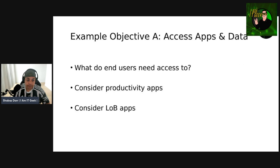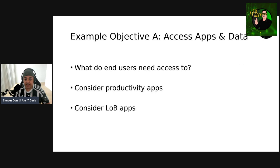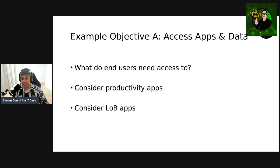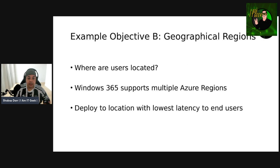Let's talk about Objective A first — accessing apps and data. You need to determine what your end users need to access from their cloud PCs. If end users will use Windows 365 as a desktop replacement, consider productivity apps like Office 365 or collaboration tools like Microsoft Teams. If they use it for specialized software, consider installing line-of-business applications within the image. A key task is to make a list of applications tailored to specific use cases.